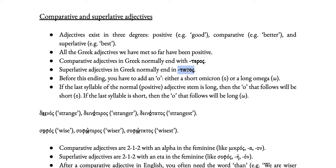Comparative adjectives usually end in -teros and superlatives in -tatos. Before those endings you need to add some kind of o-vowel — either a short o (omicron) or a long o (omega). To know which one to use, you look at the positive form and examine the last syllable of its stem. If that last syllable is long, you use a short o; if it's short, you use a long o. The o is always the opposite of the last vowel in the stem.